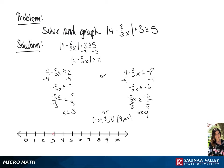Now to graph this, we're going to draw a closed circle around 3 and an arrow going towards the left, or towards negative infinity. And we're going to draw a closed circle around 9 and an arrow going to the right, or to positive infinity.